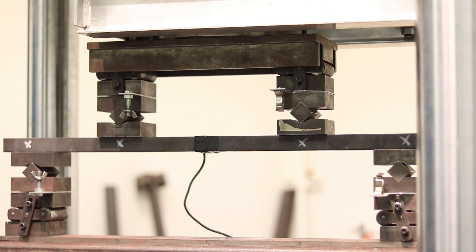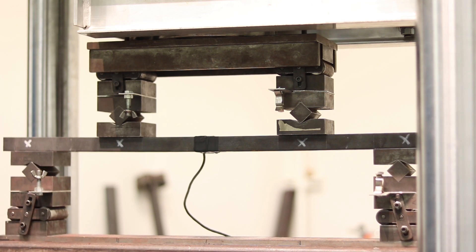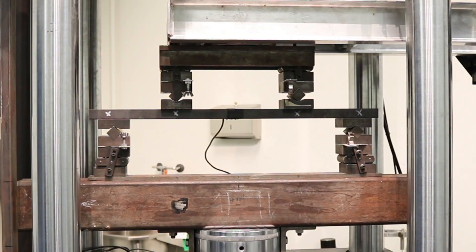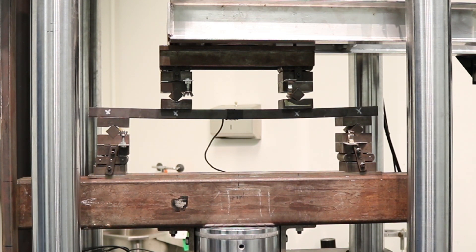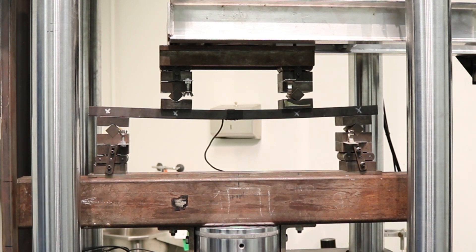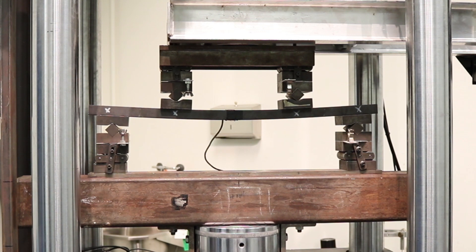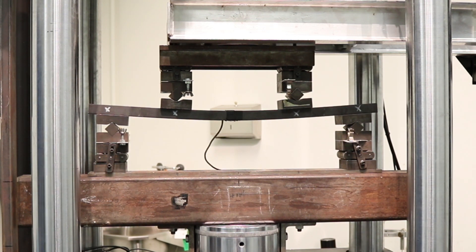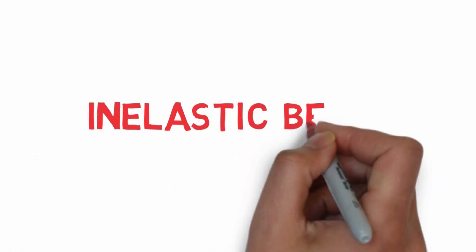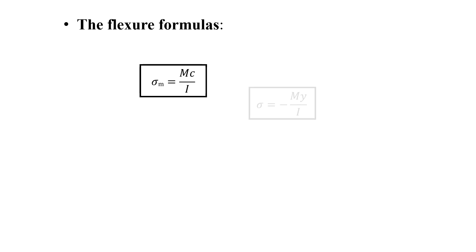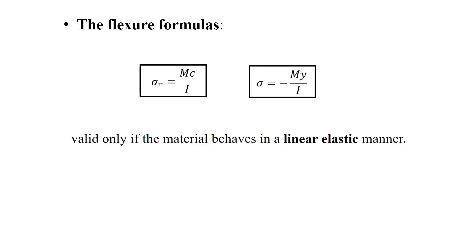Now we are going to look at a typical four-point inelastic pure bending test on a rectangular steel beam. Now we are going to learn about inelastic bending. The flexural formulas — sigma_m equals Mc over I, or sigma equals negative My over I — which we discussed in the previous video, are only valid if the material behaves in a linear elastic manner.